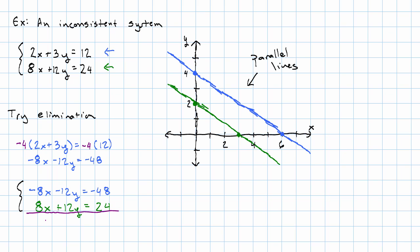Add together the x's and we get zero. Add together the y's and we get zero again. But add together the constants and we get negative 24.